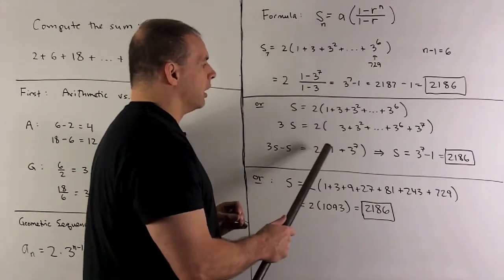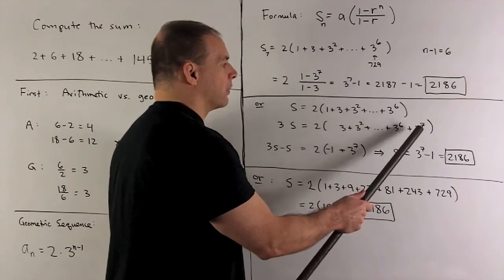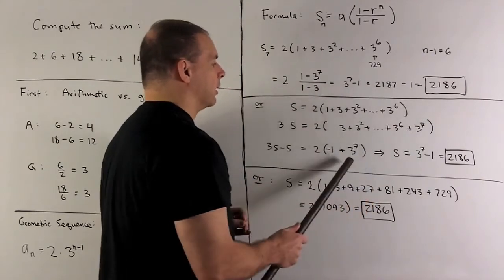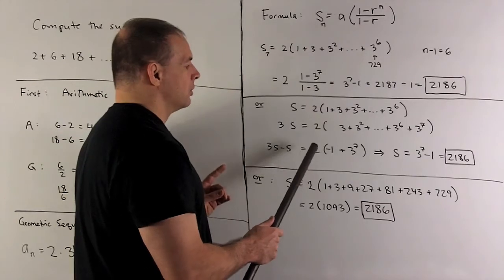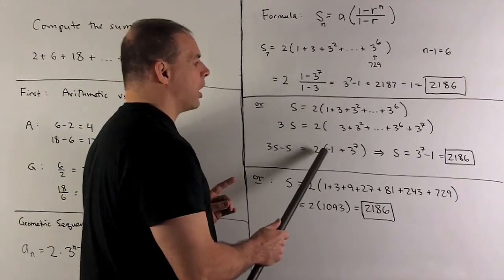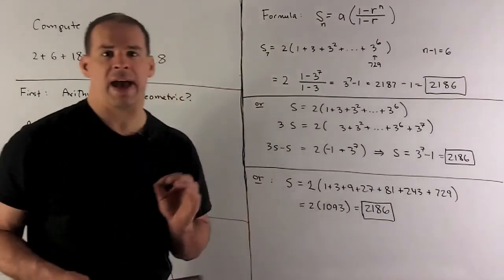Then if I just add straight down, we'll have a minus 1. All the terms in the middle go away, and then I'll have a 3 to the 7th at the end. So we're going to get 2 times s equals 2 times 3 to the 7th minus 1. s equals 3 to the 7th minus 1, we get 2,186.